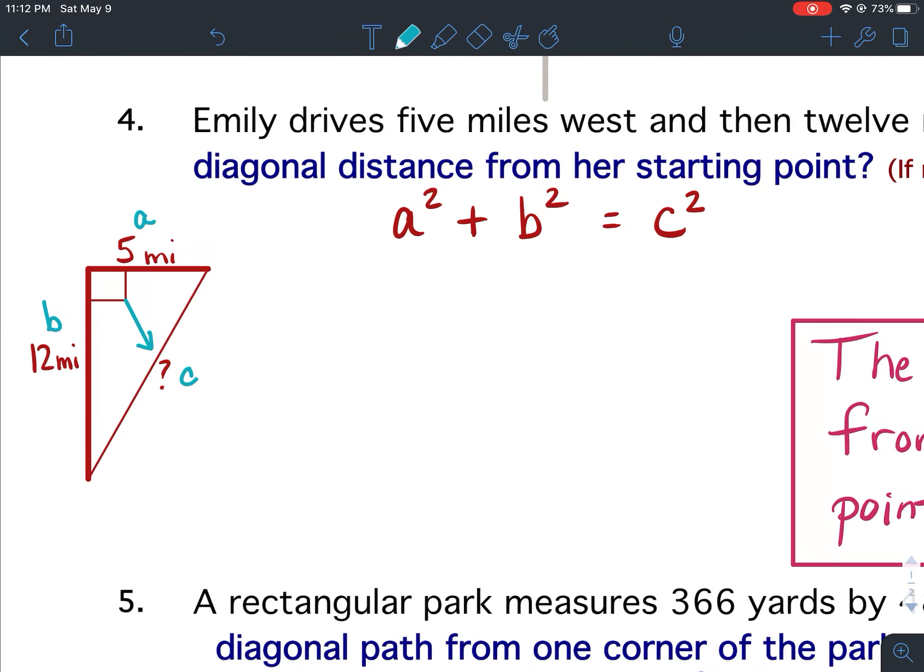So to plug that into our equation we would have 5 squared plus 12 squared equals C squared.